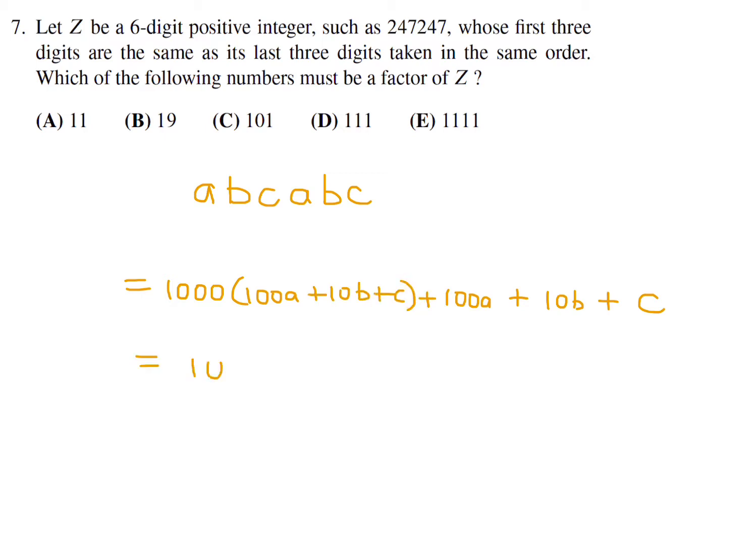100A plus 10B plus C. And then if you factor out that 100A plus 10B plus C, you will get 1,000 plus 1. And this is 100A plus 10B plus C, and that is 1,001.